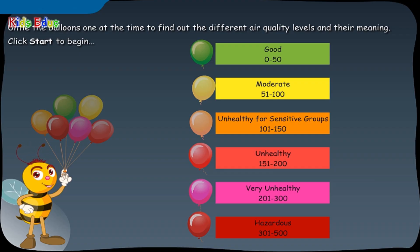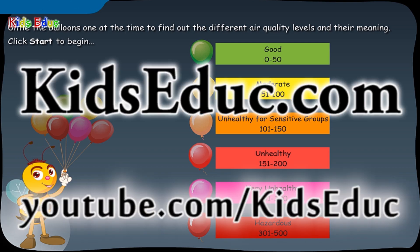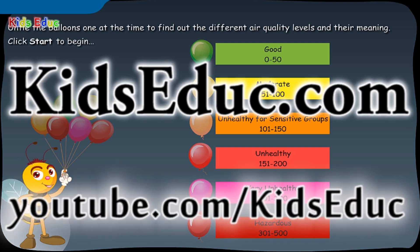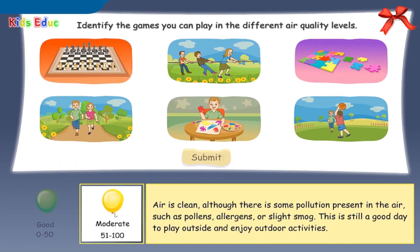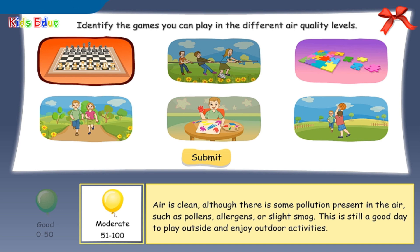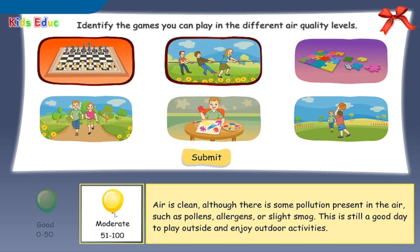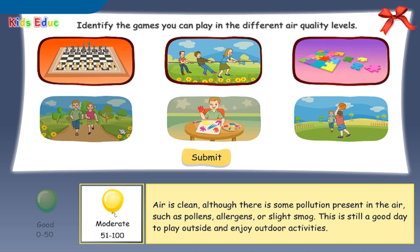Let's try out an activity. Identify the games you can play in the different air quality levels. Yellow — moderate — 51 to 100: outdoor activities, indoor activities, indoor activities, indoor activities.